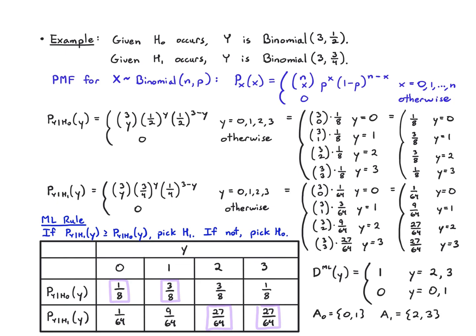If you remember, this A₀ was our notation for the part of the range of y where we're deciding 0, and in this case that's when y is equal to 0 and 1, and A₁ was where we were deciding 1, and that's when it's 2 or 3.